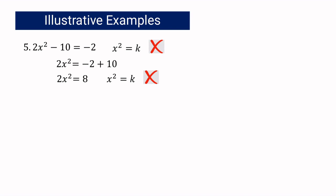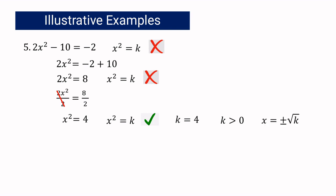So we divide both sides by 2, giving the equation x squared equals 4. Is it now written in x squared equals k? Yes. k equals 4 and it is greater than 0. If k is greater than 0, x equals positive or negative square root of k. So x equals positive or negative square root of 4, and since the square root of 4 is 2, the final answer is x equals positive or negative 2.